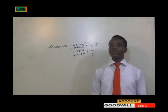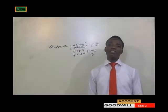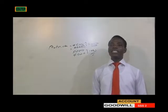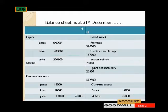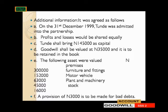Let's go to the illustration. Here we treat a revaluation account. The question says James, Luke, and John are in a partnership sharing profit and loss equally. The following is the balance sheet of the business as of 31st December 1999. This is the balance sheet the three partners have before any new partner has been admitted, and that is where we work on and prepare our revaluation account.